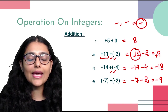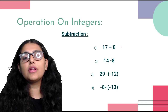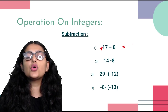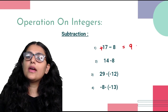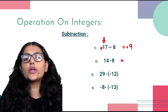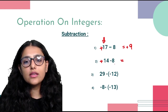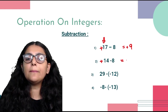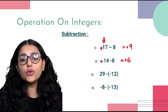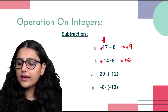Now subtraction: 17 minus positive 8 — one positive, one negative — operation is minus. 17 minus 8 = 9, and it's positive 9 because the larger number has a positive sign. Then 14 minus negative 8: plus and minus gives minus, so 14 minus 8 = 6, which is positive 6 because 14 (the larger number) has a positive sign.